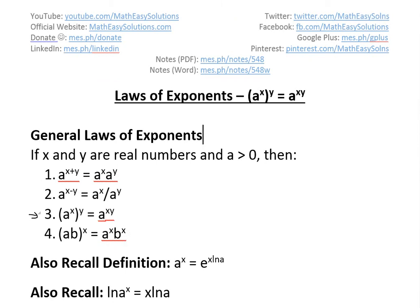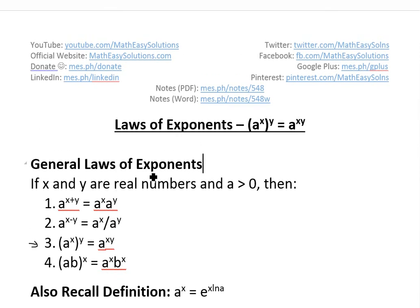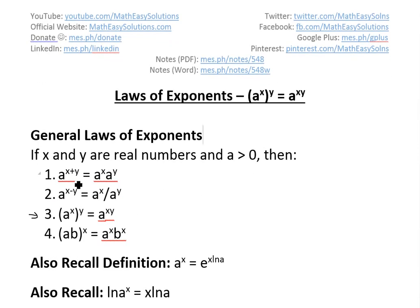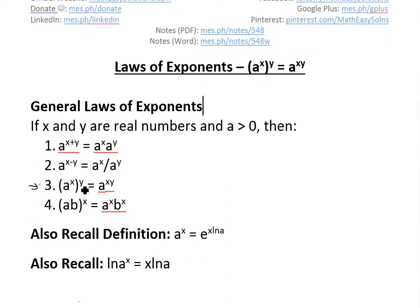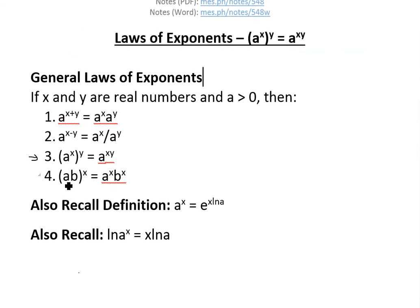To recap, general laws of exponents: if x and y are real numbers and a is greater than zero, then we have the first law a^(x+y) = a^x times a^y. If it's a minus, we divide it out. If you have a bracket like this, (a^x)^y equals a^(xy). And the last one, (ab)^x is the same thing as writing a^x times b^x.